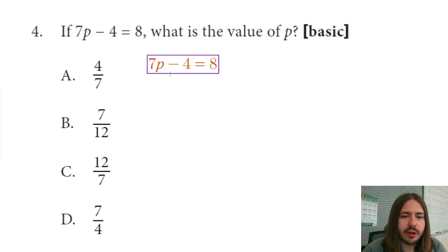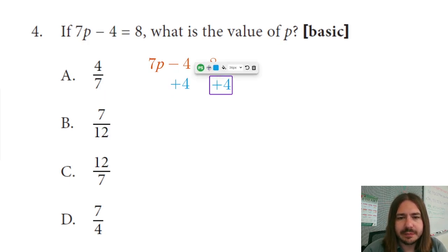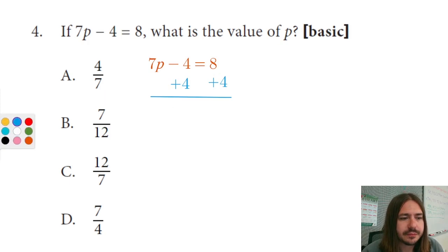The first property of equality that we're going to use is going to be the property of addition. We're going to add 4 to both sides to get rid of that minus 4 on the left-hand side. Ultimately, what we're trying to do here is isolate P. So any numbers that we see on the same side of the equation as P need to be dealt with. We need to get rid of this minus 4. So to get rid of this minus 4, we're going to add 4. And our addition property of equality says that if we do add something to one side, we have to do it to the other.